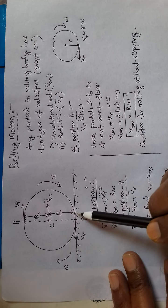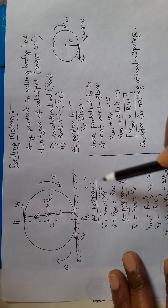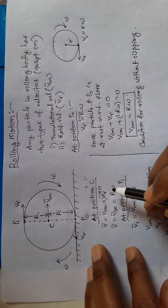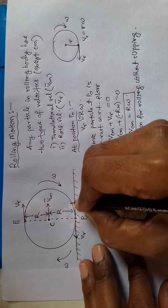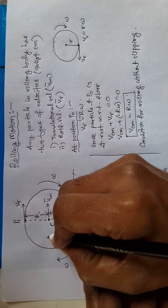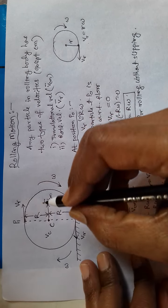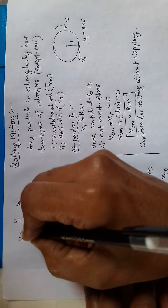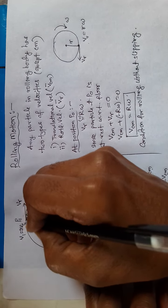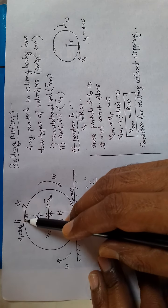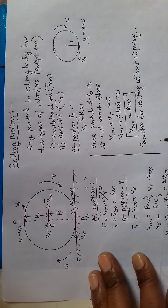To summarize the velocities at different positions: at P0 (bottom, touching floor), the velocity is zero. At C (center of mass), the velocity is Vcm. At P1 (top), the velocity is 2Vcm.